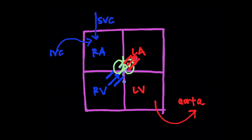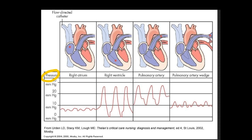Basically, the catheter goes down your SVC into your right atrium, then passes into the right ventricle, and then you float it by opening up the balloon into the pulmonary artery. As you're doing this, you measure the pressures — the pressure in the RA, pressure in the RV, the pressure at the pulmonary artery, and then the pulmonary artery occlusion pressure. This cartoon drawing shows how the catheter travels through the chambers of the heart and into the pulmonary artery.